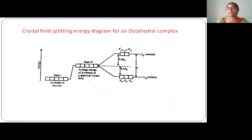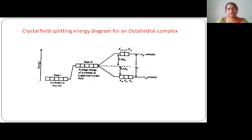Now we'll see the crystal field splitting in octahedral complexes. In the free metal atom, all the d orbitals are at the same energy — we call these degenerate d orbitals. When the ligands approach towards the metal atom, the degeneracy of all these d orbitals disappears and they split into two groups: eg and t2g. That is called crystal field splitting in octahedral complexes.